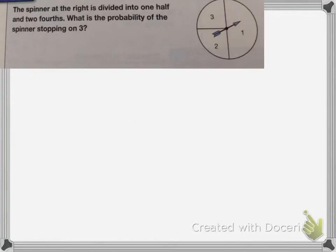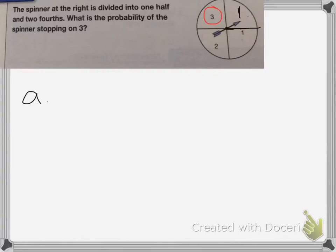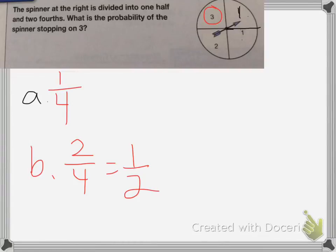On this last one, a spinner is divided into one-half and two-fourths. What's the probability of the spinner stopping on three? We have three different outcomes: it can land on one, two, or three. To figure out the probability of landing on three, I divide the circle so all pieces are equal — in fourths — and there are two sections with one in it. The probability of landing on three is one out of four pieces. If I asked the probability of spinning a one, it would be two out of four pieces, or one-half. We already know it's divided into one-half, so it has to land on one half the time. That's it for this lesson.